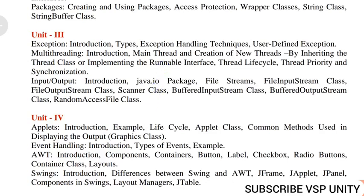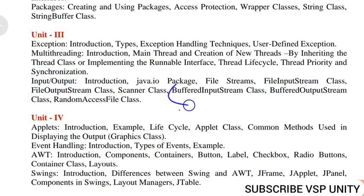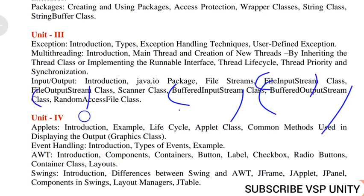In part B, the only concept is input-output streams, which is a package. You will definitely get a long answer from it — what is file input stream and what is file output stream. You will get only one of these two. Apart from file input-output, one more important concept is buffered input and buffered output stream, which have different methods — more than 15 methods. If you write just 8 or 5, you will get full marks. So in part B, learn file input stream, file output stream, buffer input stream, and buffer output stream.